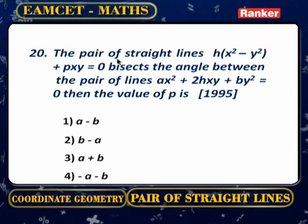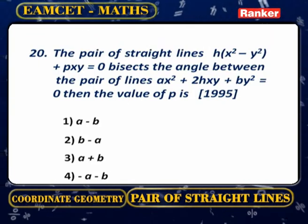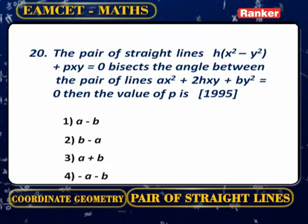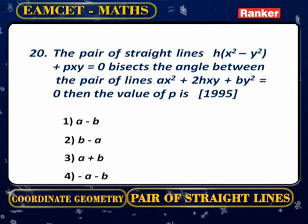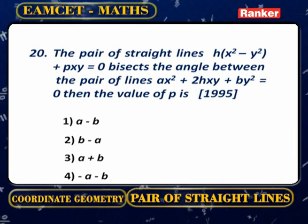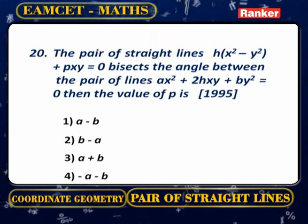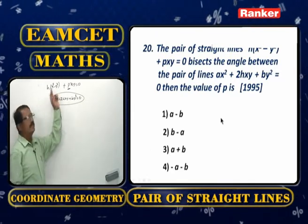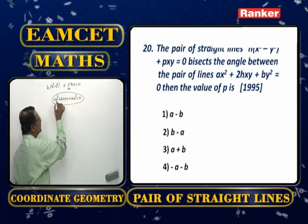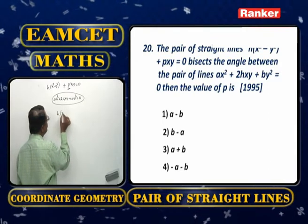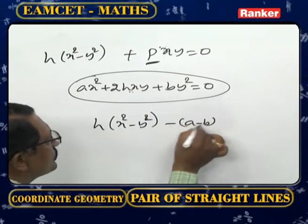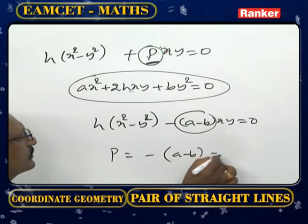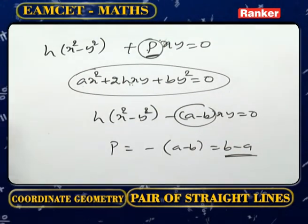For the pair of straight lines h(x² − y²) + p·xy = 0, where the equation of angle bisectors of ax² + 2hxy + py² = 0 is h(x² − y²) − (a − b)xy = 0. Equating coefficients of xy: p = −(a − b) = b − a. The value of p equals b − a. Second option.